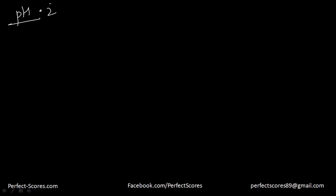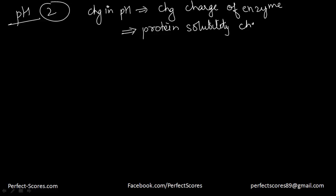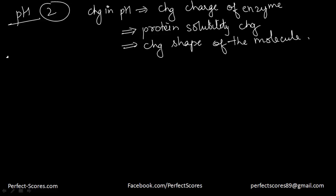Changing the pH can alter the charge of the enzyme, which in turn changes the protein's solubility and can change the shape of the molecule. Changing the shape or charge of the active site reduces the enzyme's ability to bind substrate, thereby removing its function. Enzymes have an optimum pH that differs between enzymes, and moving outside this range will always result in a diminished rate of reaction.